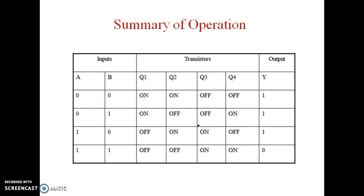The operation is summarized in this table: inputs A, B, transistor conditions Q1 to Q4, and output Y. From the truth table it is seen that it is exactly the reverse of the AND gate, that is, it is a NAND gate. So when both the inputs are high, output is low, otherwise the output is high. Thank you.